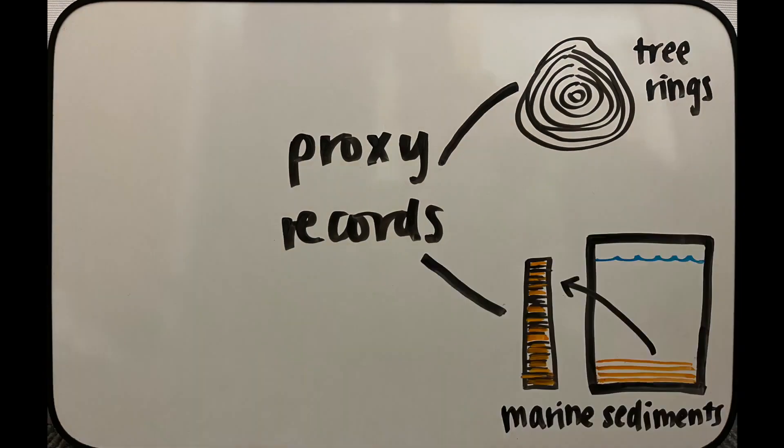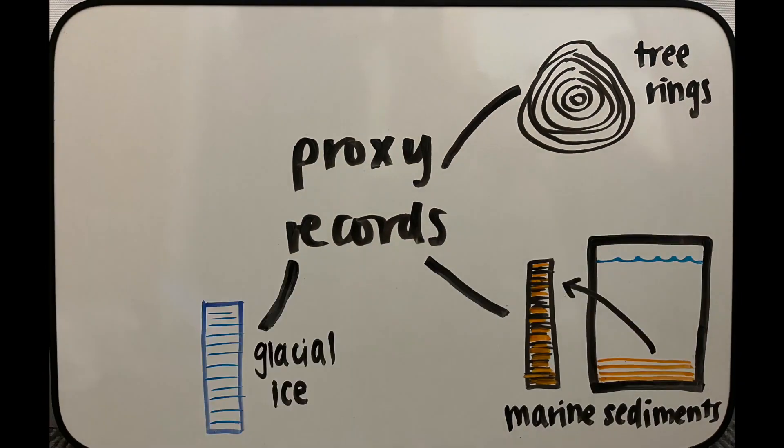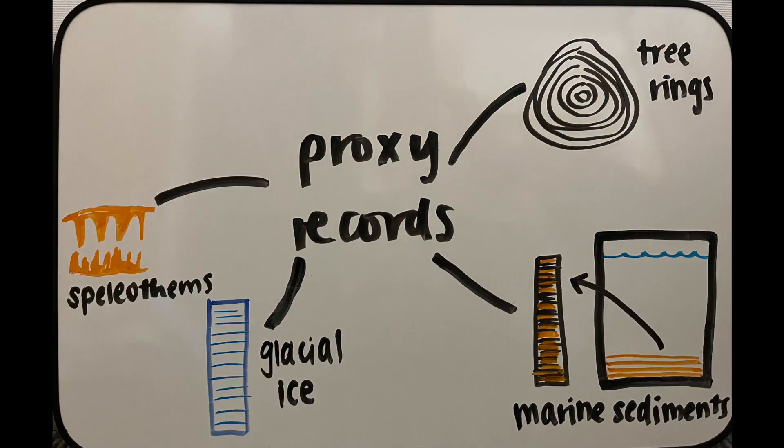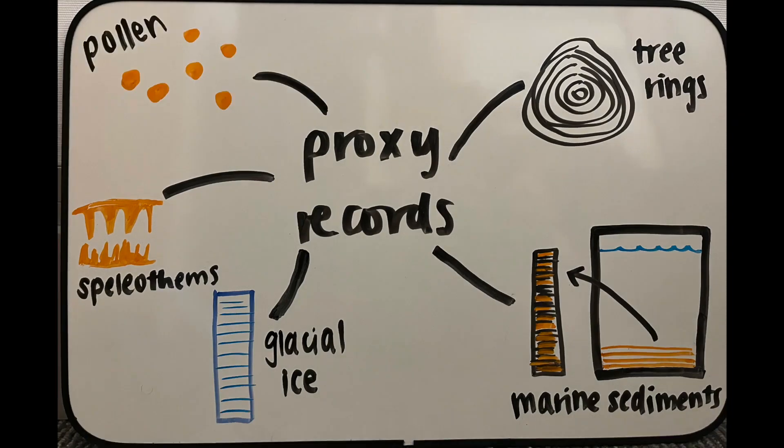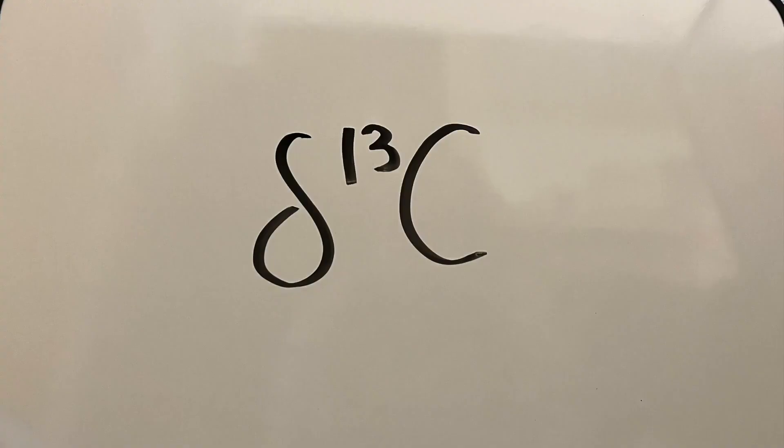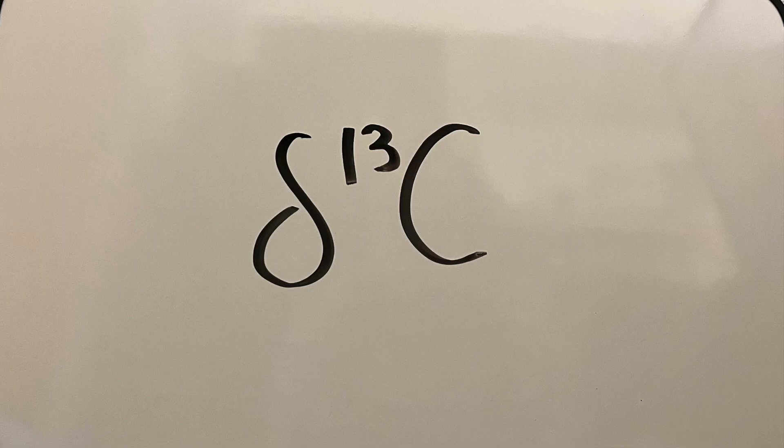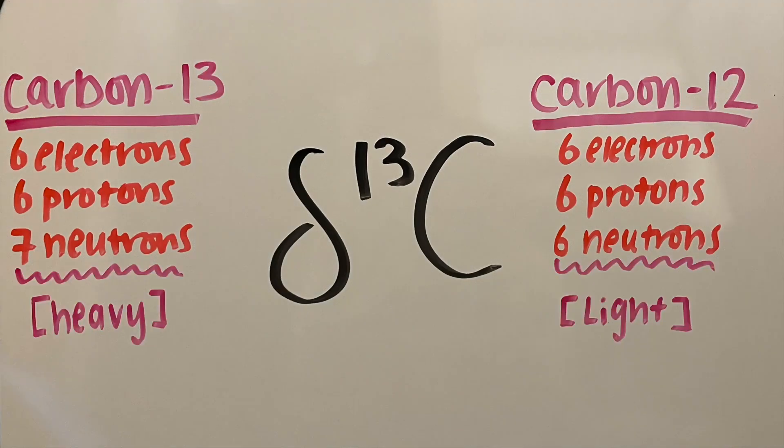Like tree rings, marine sediments, glacial ice, cave deposits called speleothems, and pollen in lake sediments. One of my favorite ways to measure the changes in past climate and environment is by using delta C13. Delta C13 is an isotopic signature that measures the ratio between the two stable isotopes of carbon: carbon-13, which is heavier in mass, and carbon-12, which is lighter in mass.